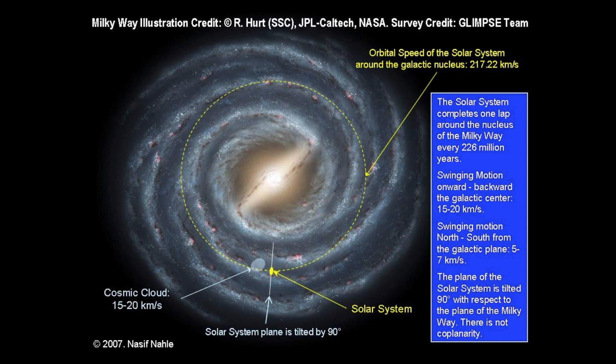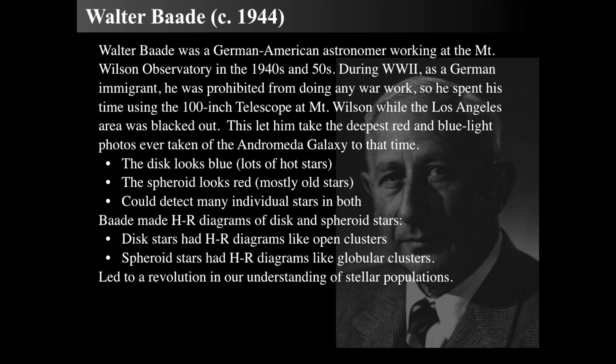Looking at a Milky Way analog, we see that our Sun would be going around a system approximately 100,000 light years across, and takes about 225 million years to orbit the spiral galaxy that is our Milky Way.